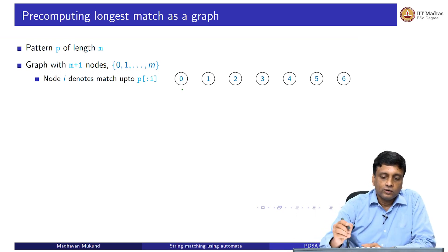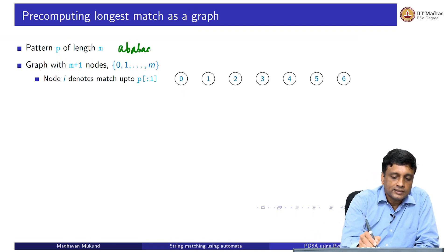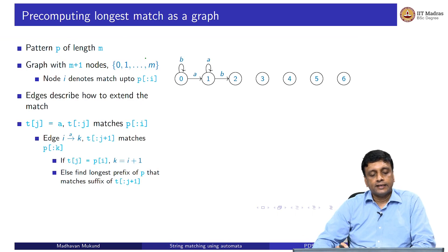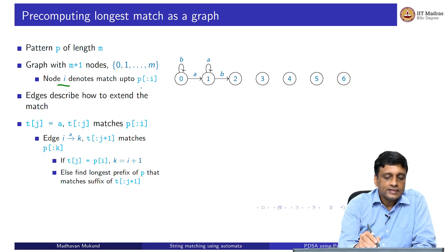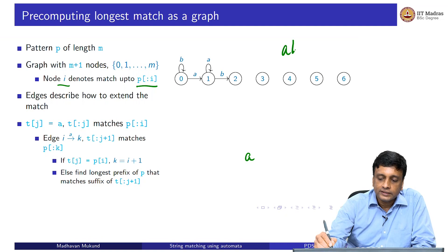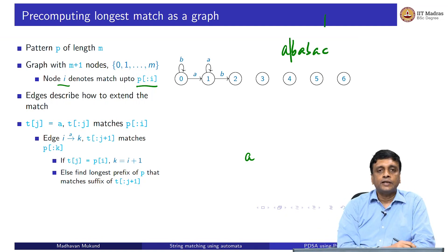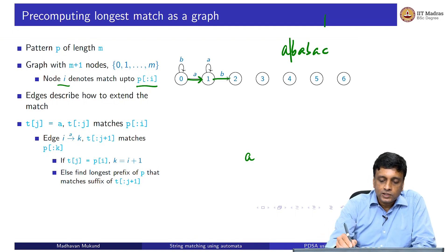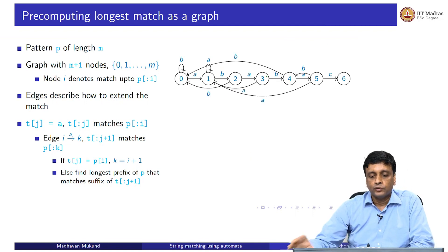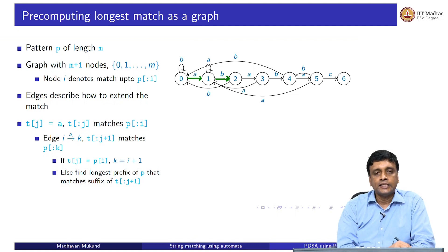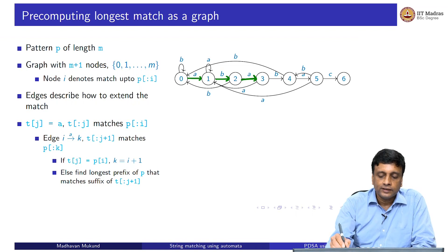Let us assume m is 6, using our example pattern 'ababac'. So I create 7 nodes, 0 to 6. I construct edges that tell me how much the match has extended. The interpretation of node i is that the sequence seen so far matches up to position i. If I see an 'a' starting from the empty string, I have matched up to position 1, so I go from 0 to 1. If I then see a 'b', I have matched two positions and go forward. As long as I make correct matches, I keep going forward.